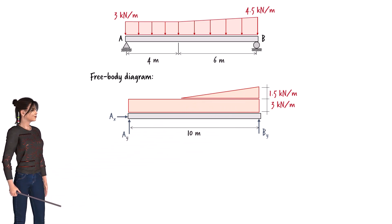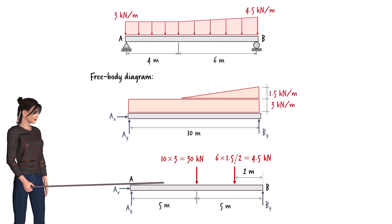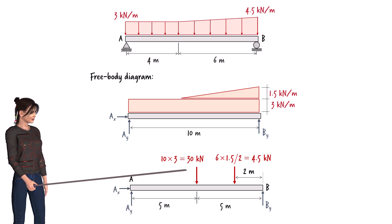Each part can be replaced with its equivalent point load. Since the area of the rectangle is 30, we can replace the rectangular load with a point load of 30 kN. The load is placed at the center of the rectangle, which corresponds to the beam's midpoint.